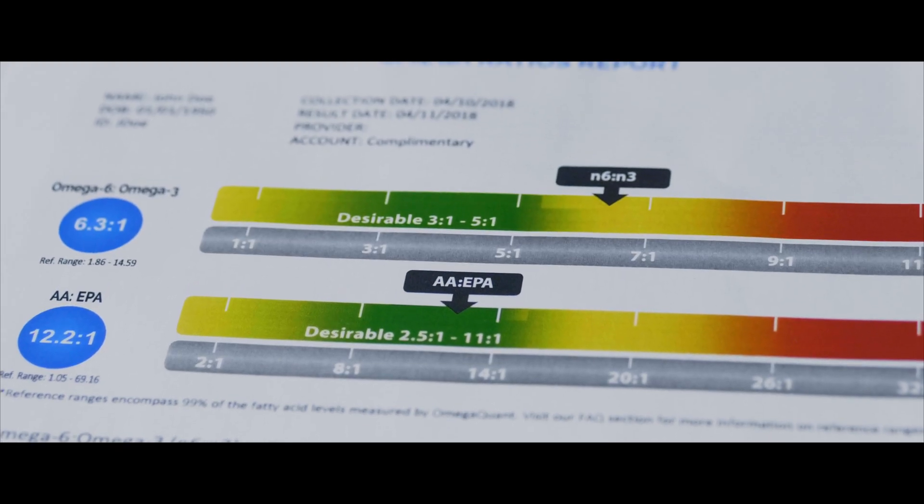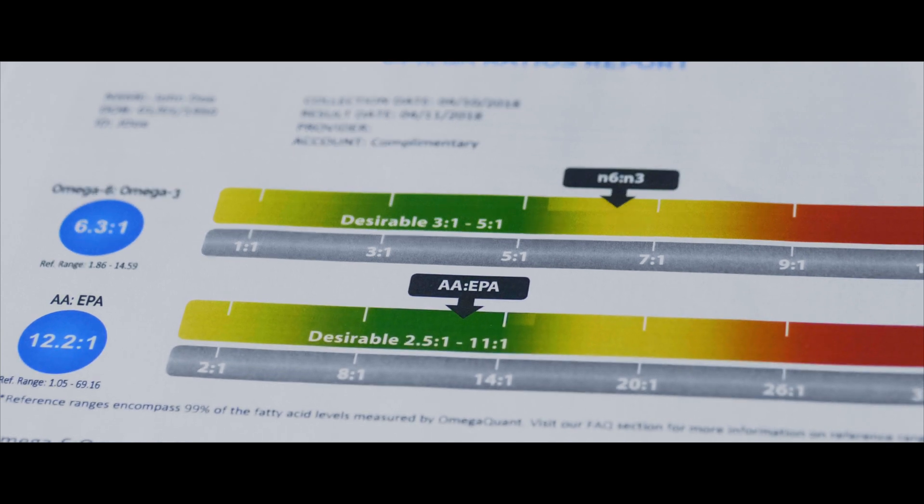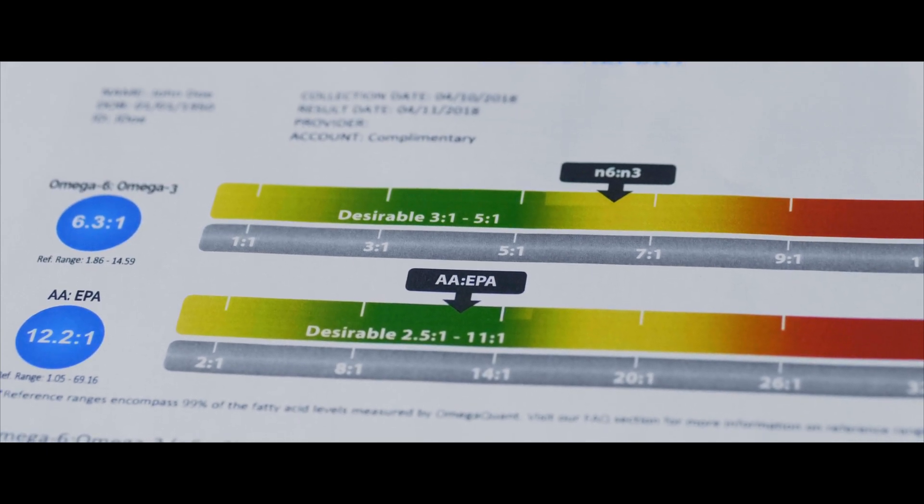The other ratio on your report is the AA-EPA ratio, which stands for the arachidonic to eicosapentaenoic acid ratio. Arachidonic acid is an omega-6 and EPA is an omega-3 fatty acid. These are very important fatty acids in metabolism because eicosanoids and prostaglandins can be made from both of these fatty acids.